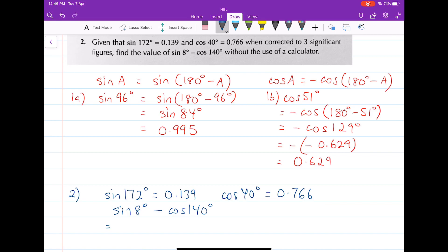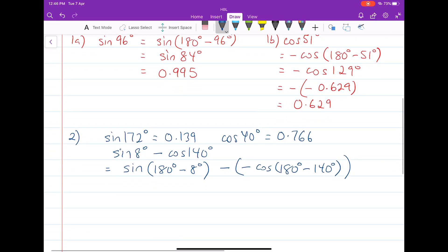Sine 8 degrees will be actually equal to sine 172 degrees. So let's write this down. Sine 8 degrees is equals to sine 180 degrees minus 8 degrees. And for the next one, minus cosine 140 degrees is actually the same as minus cosine 180 degrees minus 140 degrees. This one will result in sine 172, the value of which we have. And this one will result in plus cosine 40 degrees.